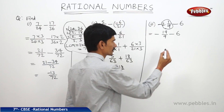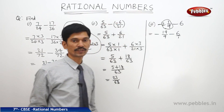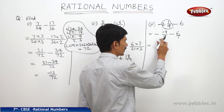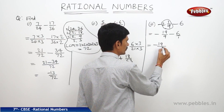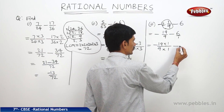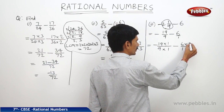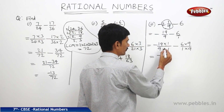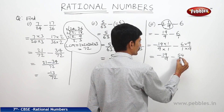Now 6 can be written as 6 by 1. The denominators are 9 and 1, which are not equal, so we must make them equal. Find the LCM of 9 and 1, which is 9. Take minus 19 by 9 and multiply both numerator and denominator by 1. For minus 6 by 1, multiply both numerator and denominator by 9. This gives minus 19 by 9 minus 54 by 9.